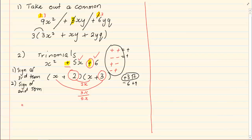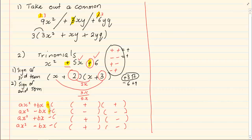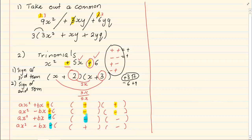A basic way to remember trinomials: if I am given ax squared plus bx plus c, then my two brackets are plus and plus. If I am given ax squared minus bx plus c, my two brackets are minus and minus. If I am given ax squared plus bx minus c, then one bracket is plus and one bracket is minus. If I am given ax squared minus bx minus c, then one bracket is plus and one bracket is minus. Pay attention to the signs — when I had a plus on my c, then the signs in the brackets were the same. When I had a minus on my c, then the signs on my brackets were different.